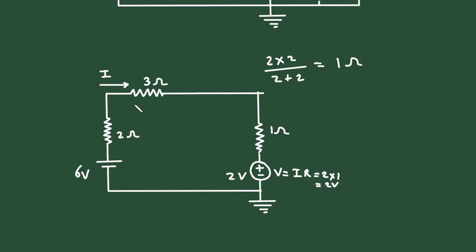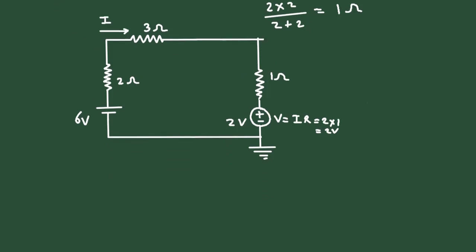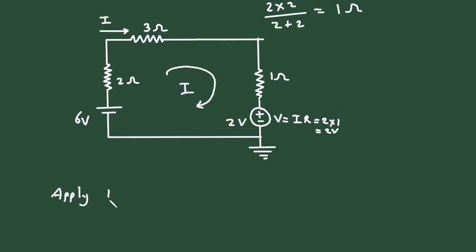Next, we have to find this current I. According to KVL, let us say this is a loop current I. We will apply KVL to the loop.